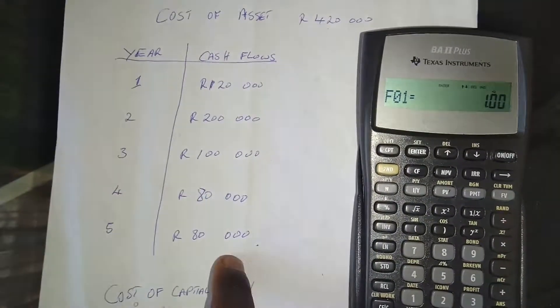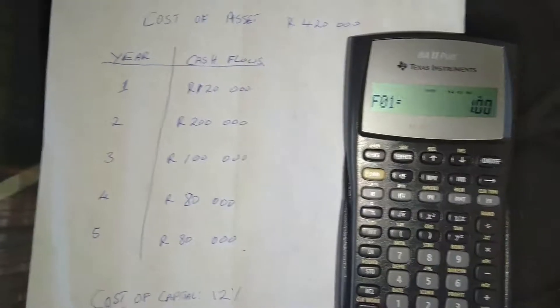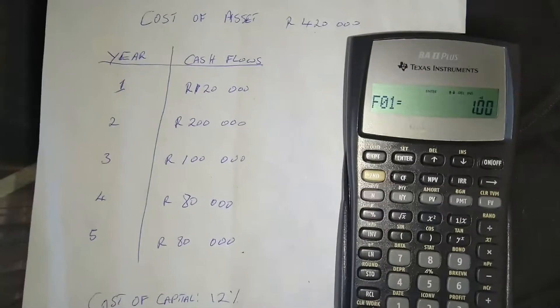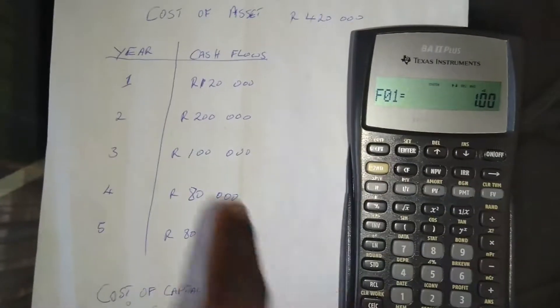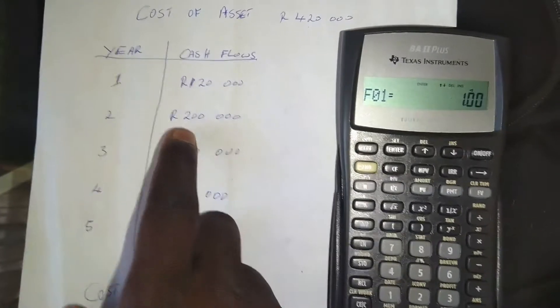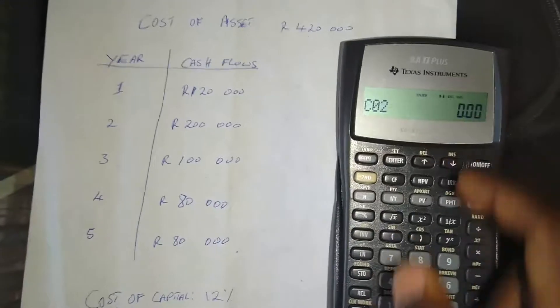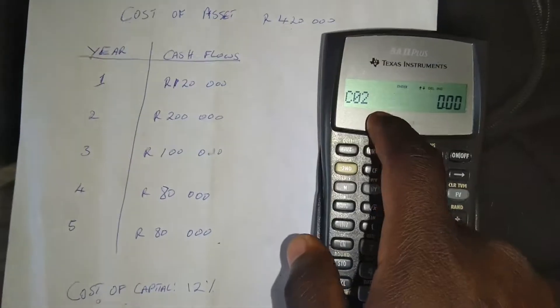Or if it occurred for all the five years, we'd press frequency of cash flows, five years, and then we'd be done. So it's just to simplify your work. But we don't have 120,000 rand in year two. So it doesn't occur in a row. So we press the down button again to go to cash flow at period two.